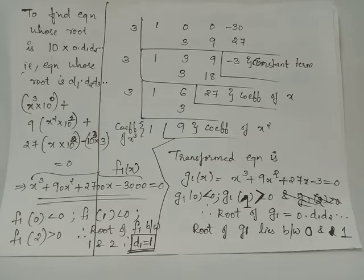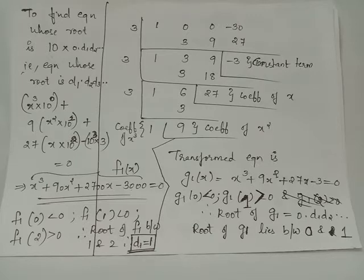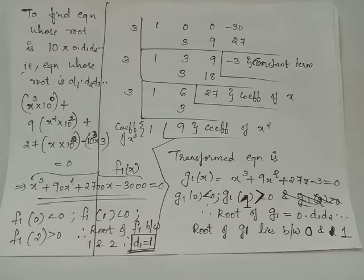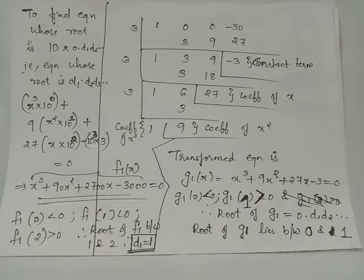In the expression of f1(x) we try values of x to find the interval in which the root lies. For x = 0 and x = 1, f1(x) is negative, and for x = 2, f1(2) > 0. This ensures the root of f1(x) lies in the interval (1, 2). Since the lower bound is 1, the integral part of the root of f1 is 1, so d1 = 1.